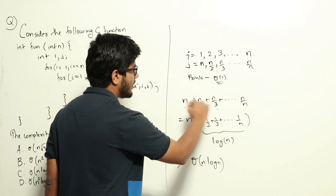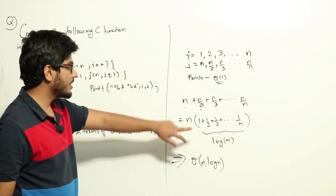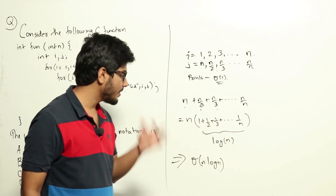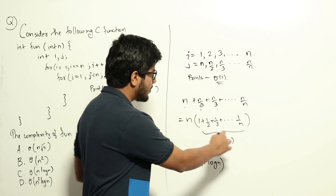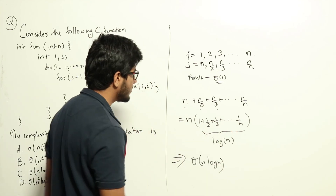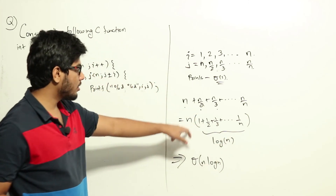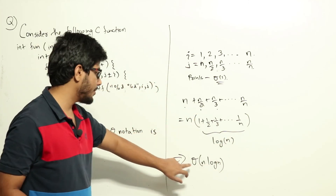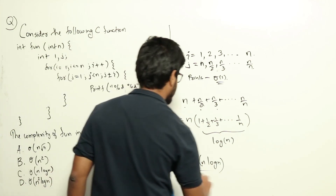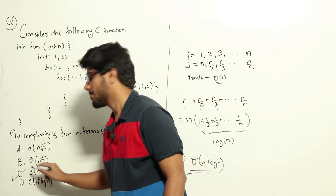The total complexity is n + n/2 + n/3 + ... + n/n. We can rewrite this as n times (1 + 1/2 + 1/3 + ... + 1/n). Now, 1 + 1/2 + 1/3 + ... + 1/n is the harmonic series, which has no exact closed form but is approximately log n. Therefore, the total complexity of the function is theta(n log n). This is the answer — option C.